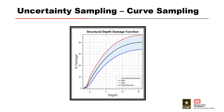In addition to distribution sampling, LifeSim also implements curve sampling. Curve sampling is the process of sampling a curve function from an array of distributions. Curve sampling is used for depth damage functions, building stability criteria, PAI functions, and warning diffusion, among other examples.